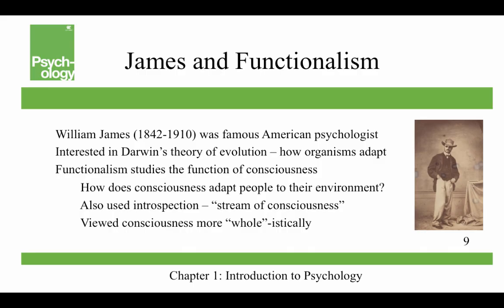William James was a famous American psychologist — that's a picture of him on a trip to Brazil. I like that picture because he's wearing sunglasses in the 1870s. He was interested in Darwin's theory of evolution and how organisms adapt to their environment. Functionalism was the study of the function of consciousness and how it adapts us to our environment. He also used introspection like Wundt, but believed in what he called a stream of consciousness, which had big implications in literature — authors like James Joyce and William Faulkner wrote in that style. He viewed consciousness more holistically, meaning you couldn't break it down into smaller component parts.